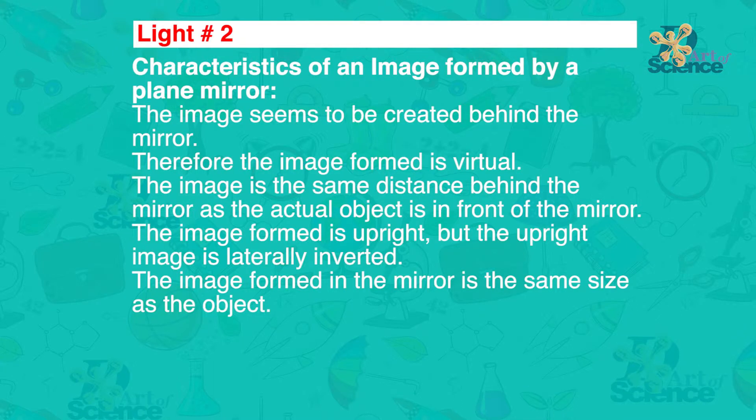Let's do a recap and move on to the TIY project. Characteristics of an image formed by a plain mirror. The image seems to be created behind the mirror. Therefore the image formed is virtual. The image is the same distance behind the mirror as the actual object is in front of the mirror. The image formed is upright, but the upright image is laterally inverted, which means left is right and right becomes left. The image formed in the mirror is the same size of the object.